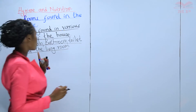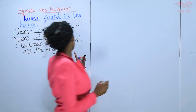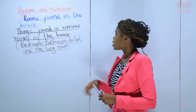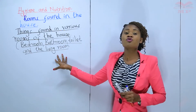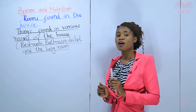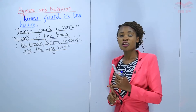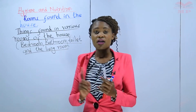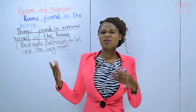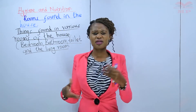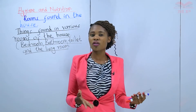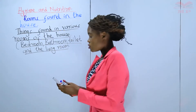So, in this lesson we are going to discuss about the things found in the bedroom, bathroom, toilet, and the dining room. In our last lesson, we discussed about things found in the kitchen, sitting room, and the living room. So let's quickly remind ourselves of what we discussed — the things found in the kitchen, the living room, and the dining room.